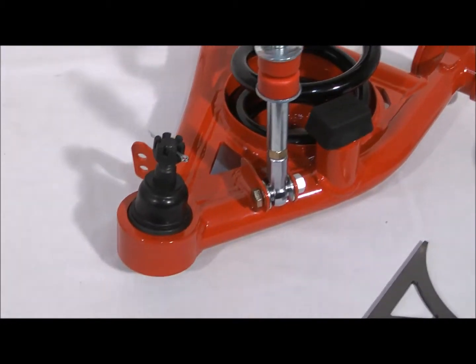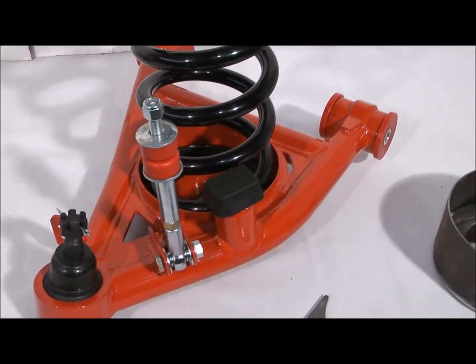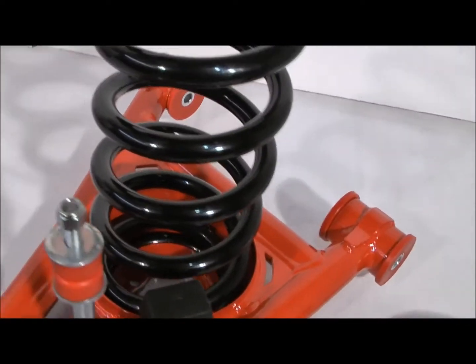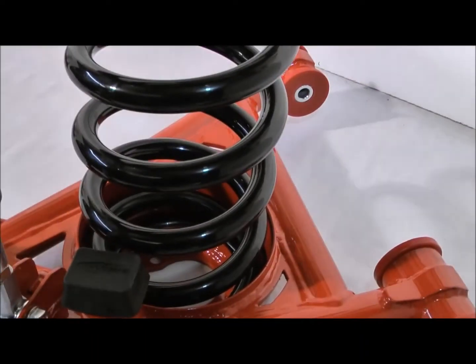We're building these out of inch and a half 120 wall seamless DOM tubing. That's for all the tubes, your two main tubes as well as your cross shaft. It's all inch and a half tubing.